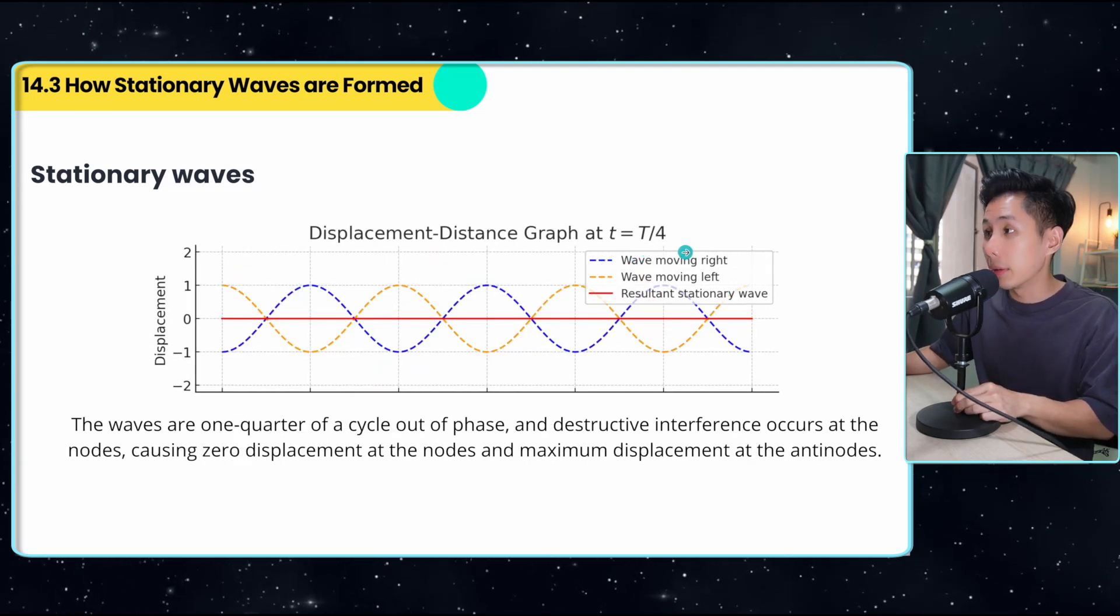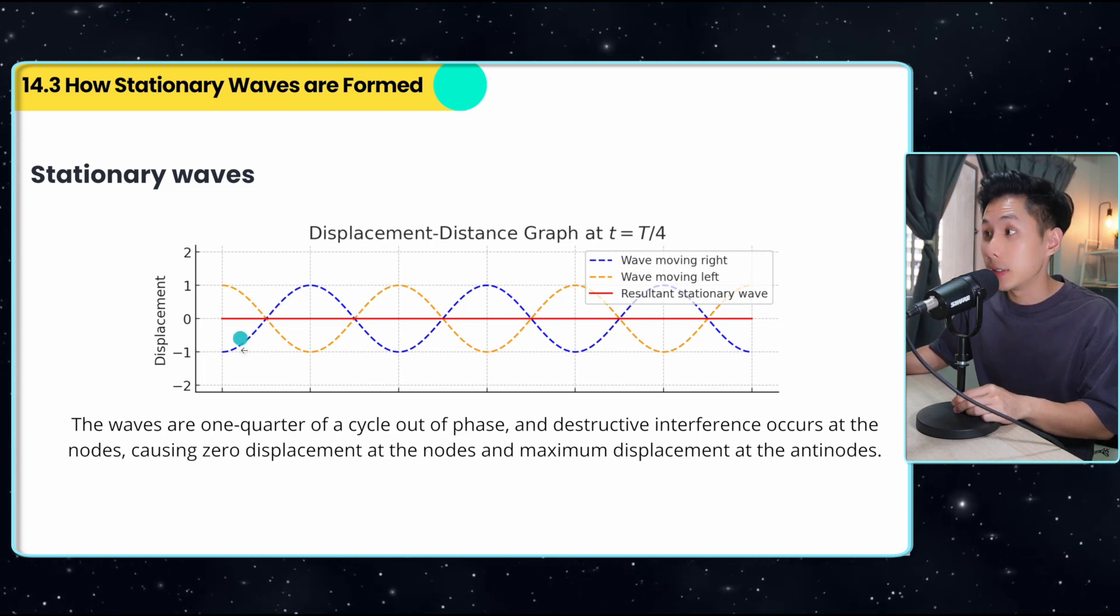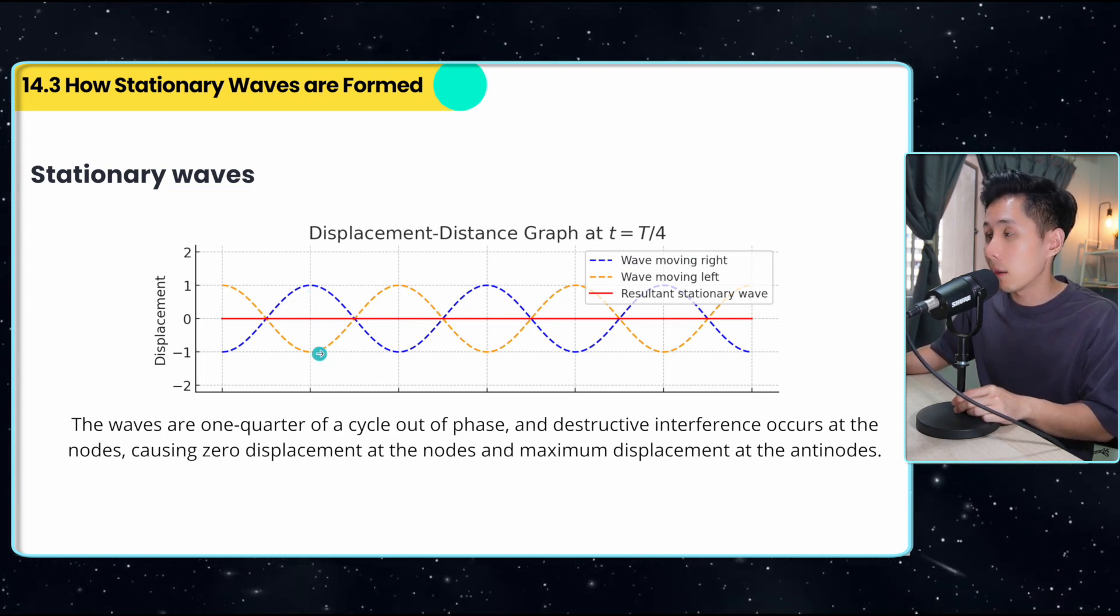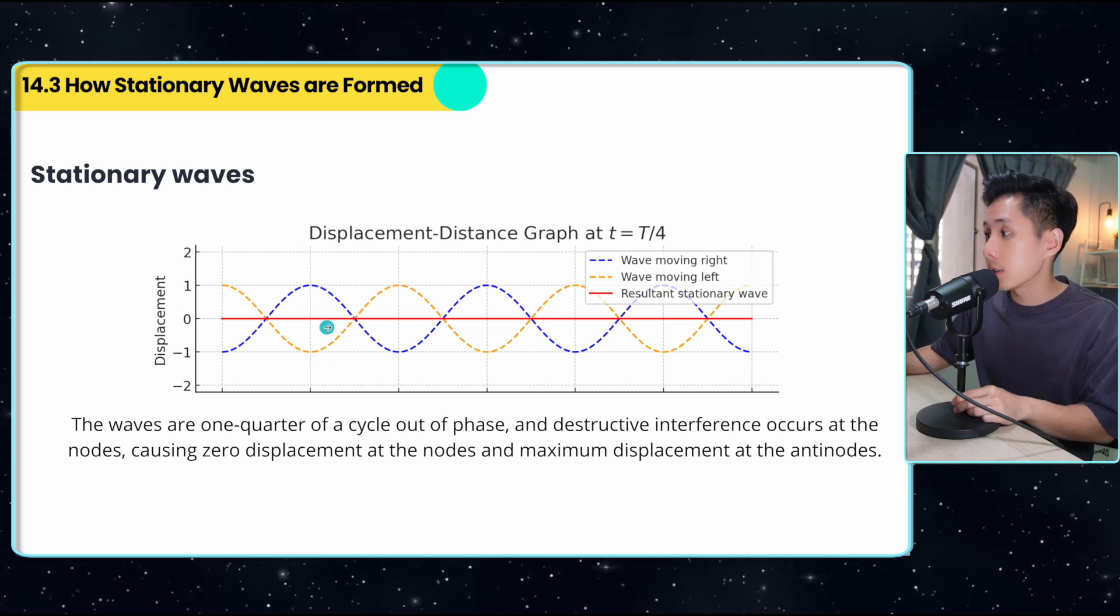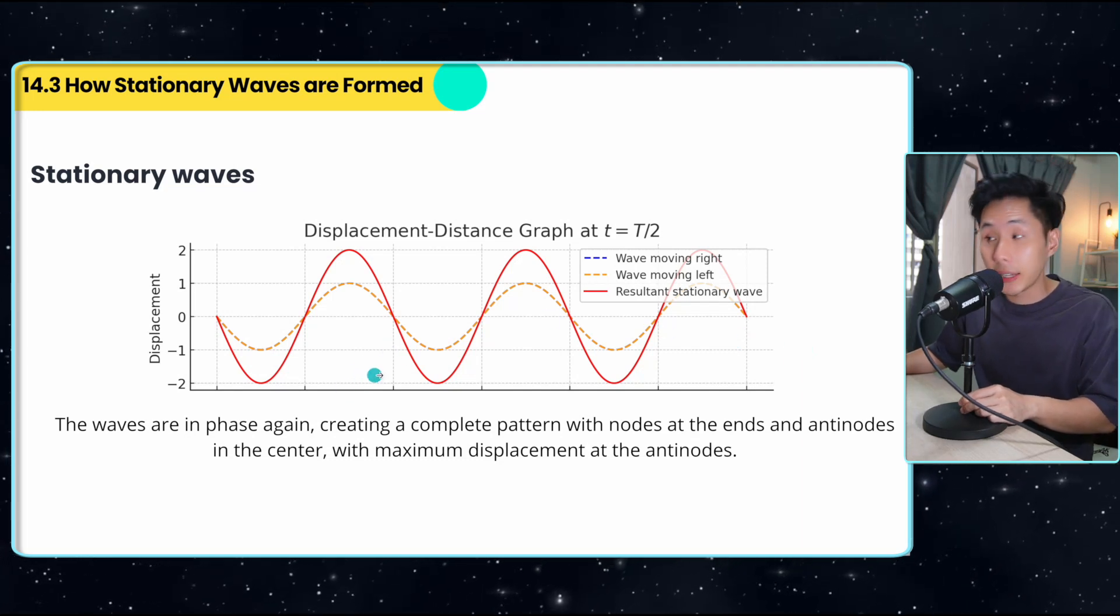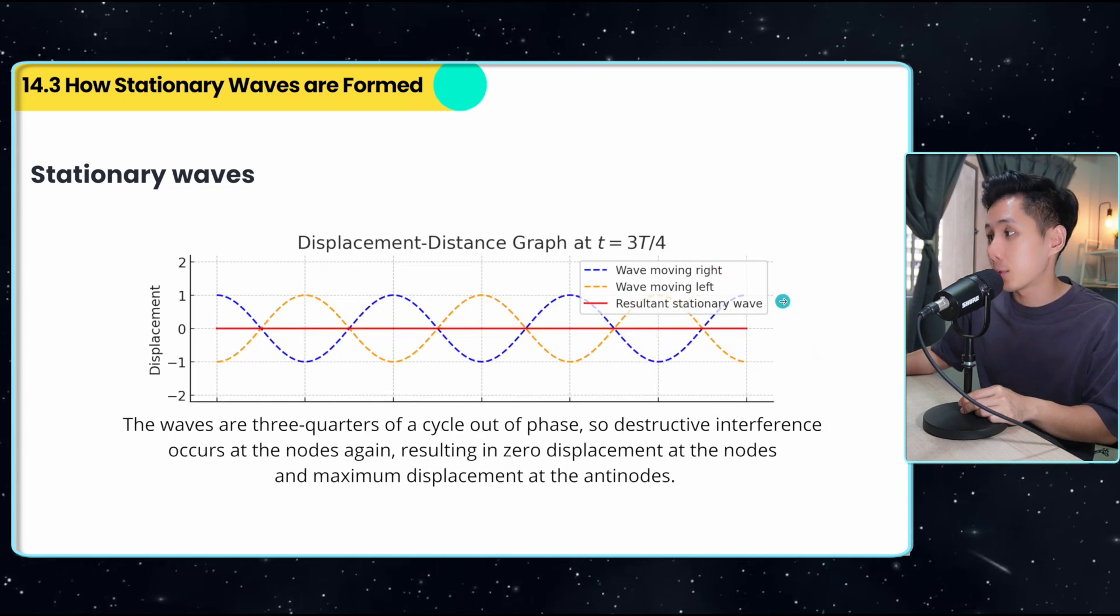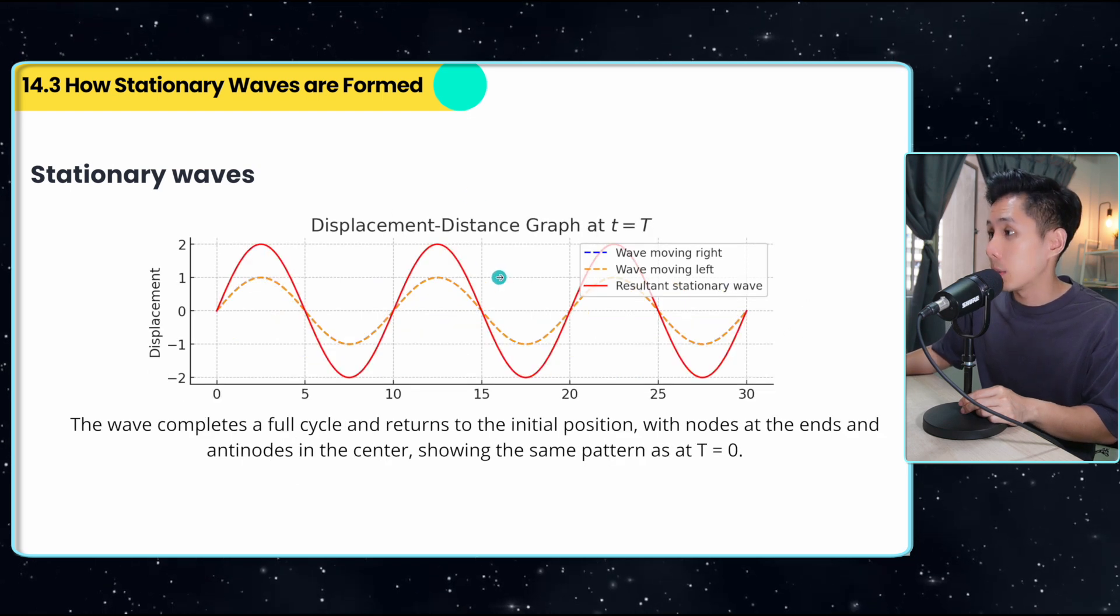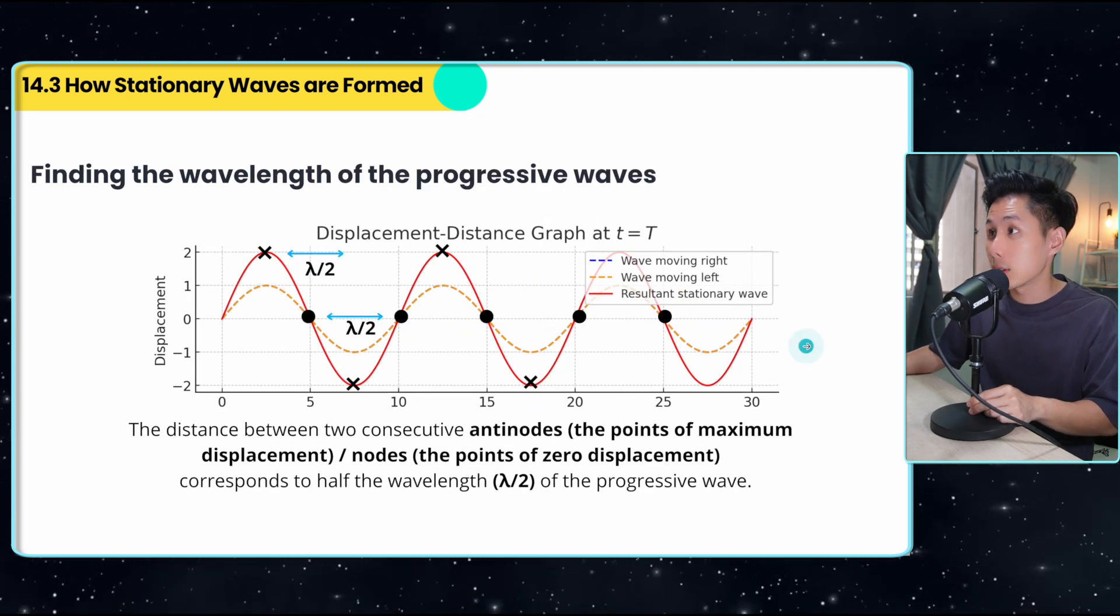So this is when t equals t over four, one quarter of the cycle, and destructive interference happens here. You can see that wave blue and wave orange, they are traveling in antiphase. This is why the resulting stationary wave is zero. And as we move on to t over two, again, they are in phase. So we have constructive interference happening. And at three quarters, destructive interference happens because they are traveling in antiphase. And we go back to t, it's a full cycle again. So this is the whole process of the stationary wave.